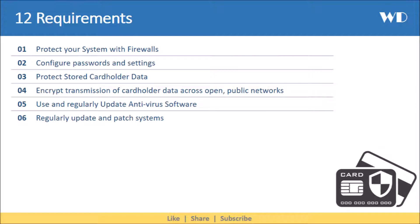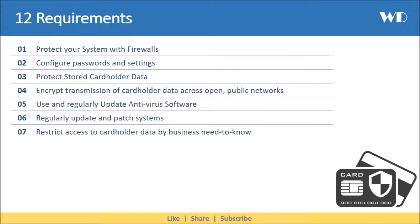The seventh requirement is to restrict access to cardholder data by business need-to-know. Documented systems and processes should be put in place to limit access rights to critical data. Access control systems should deny all access by default, and access should be granted on a need-to-know basis and according to the clearly defined job responsibilities of authorized personnel.